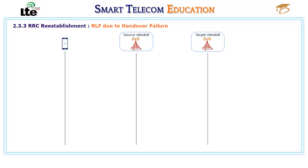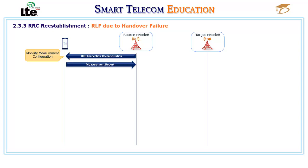A successful handover procedure in LTE for intra- and inter-frequency mobility is described in the following steps. First, the source eNodeB sends an RRC Connection Reconfiguration message to the UE, containing the mobility measurement configuration. Once the threshold is triggered following the received mobility policies, the UE sends a measurement report to the source eNodeB. The message contains the signal level of the candidate cells with their PCI. The source eNodeB decides if the handover is required or not.